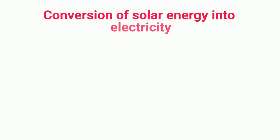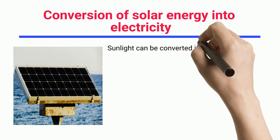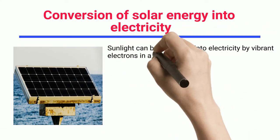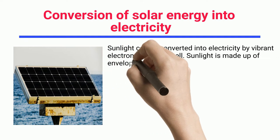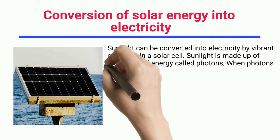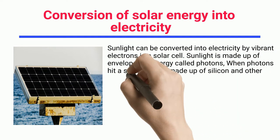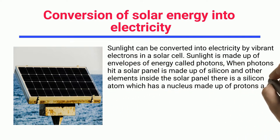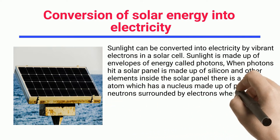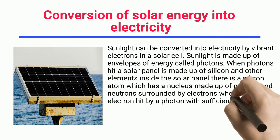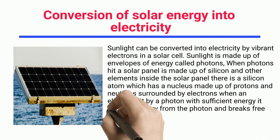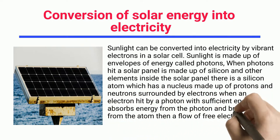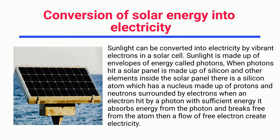Conversion of solar energy into electricity: sunlight can be converted into electricity by energizing electrons in a solar cell. Sunlight is made up of packets of energy called photons. When photons hit a solar panel made of silicon, there is a silicon atom with a nucleus of protons and neutrons surrounded by electrons. When an electron is hit by a photon with sufficient energy, it absorbs that energy, breaks free from the atom, and a flow of free electrons creates electricity.